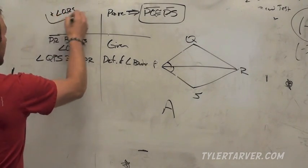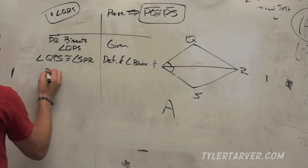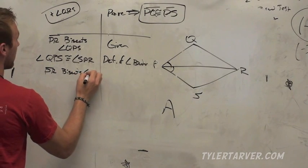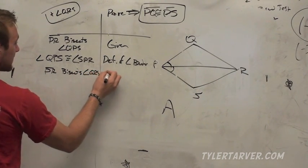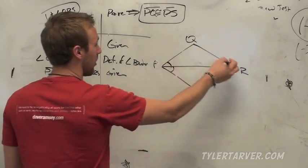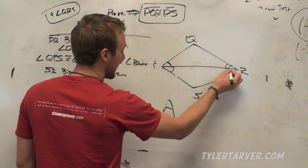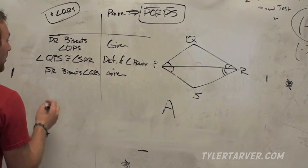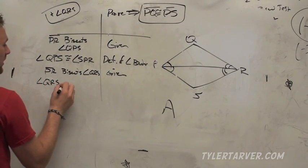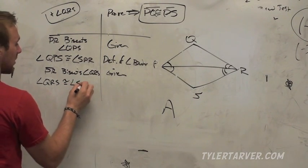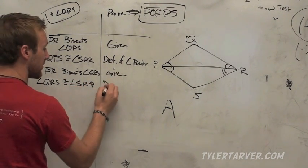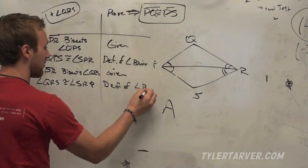The other thing I said was given that I didn't want to rewrite is that PR also bisects angle QRS. That's another given. PR bisects QRS. That means it cuts this angle in half. Doesn't mean it's equal to the same over here, but those two are equal. So same thing. Angle QRS is congruent to angle SRP. How do I know that? That's the definition of an angle bisector. All day, every day.